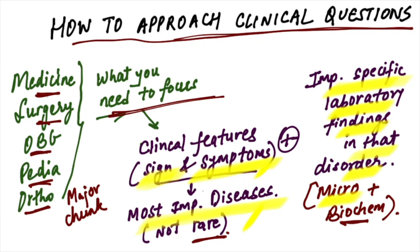Microbiology and biochemistry — you need to cover these in this pattern only. You don't need to study them just for one-liners; you need to study and correlate them with these clinical subjects. These subjects should be correlated with the most important laboratory findings and radiological pictures. This is how you should revise for clinical question solving, and it will be very helpful.